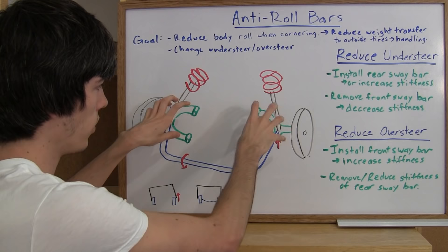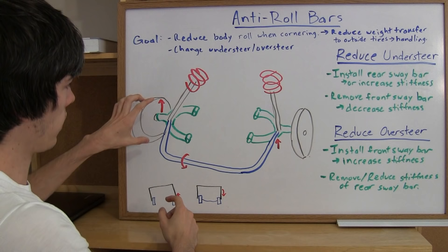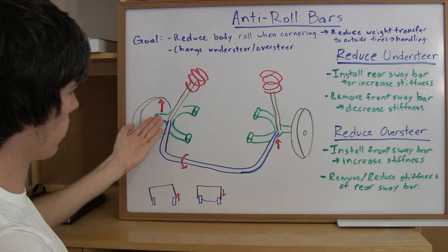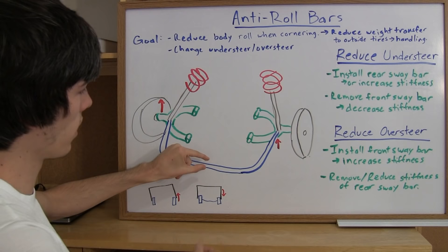Now what happens is when this tire hits a bump or some elevation change and it goes up, it'll turn this roll bar up. And so by turning that roll bar up, it's going to produce a torque along that bar which is going to force the other side to move up as well.